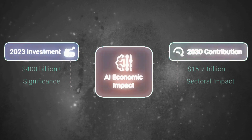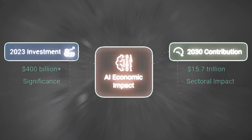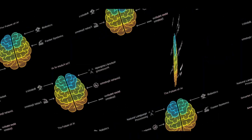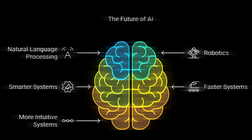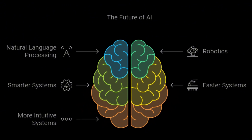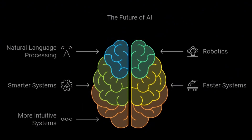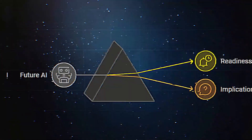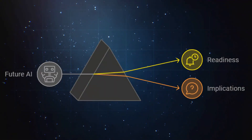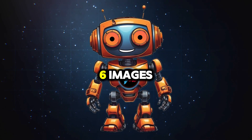AI in numbers: 400 billion-plus invested in AI in 2023. By 2030, AI is expected to contribute 15.7 trillion dollars to the global economy. What's next? AI continues to evolve with advancements in natural language processing, robotics, and more. The future promises smarter, faster, and more intuitive AI systems. AI is just getting started — are you ready for what's next?